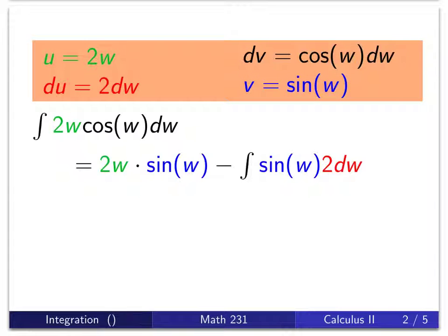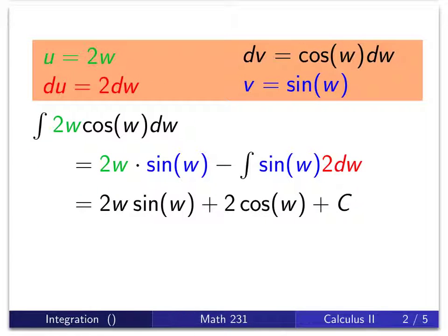There are my u's and v's, and here's my integral. I use my formula for integration by parts: u times v minus the integral of v times du. Well now this second integral is easy to evaluate. We need a function whose derivative is basically -2 sin(w), and that's just going to be 2 times the cosine of w. Remember that the derivative of the cosine is negative sine.